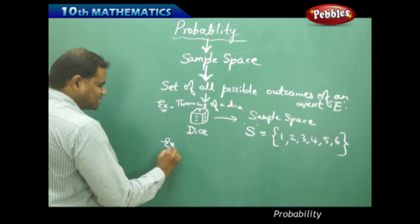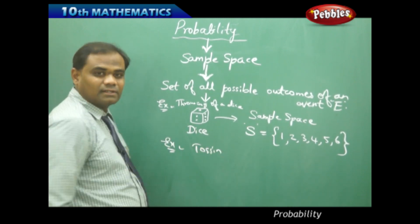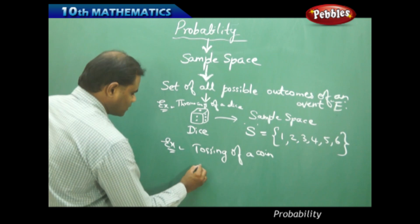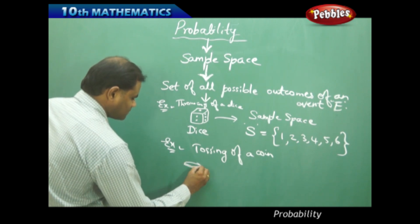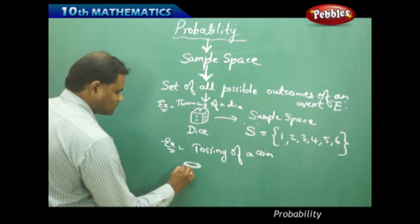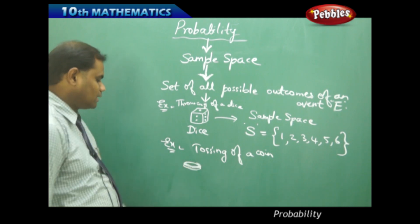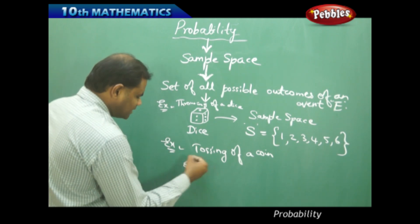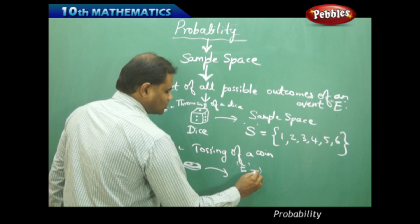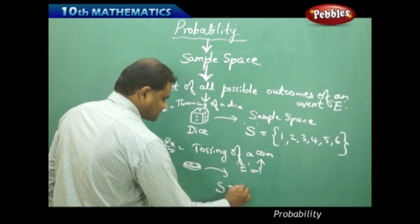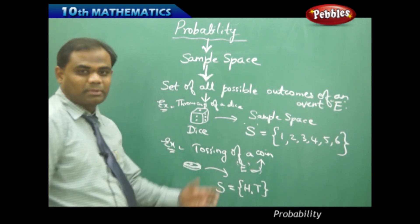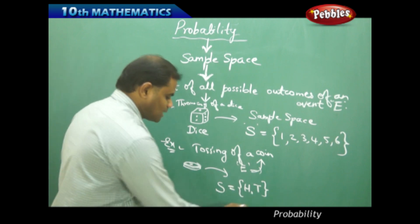Let me take one more example: tossing of a coin. When I take a coin and toss it, I have heads and then the other side we have tails. Therefore, when I toss this, the event here is tossing of a coin. Therefore, my sample space is either getting a head or a tail, because the top can be either head or tail.